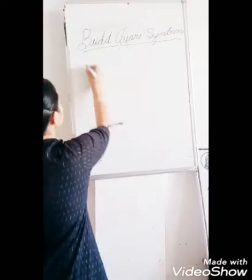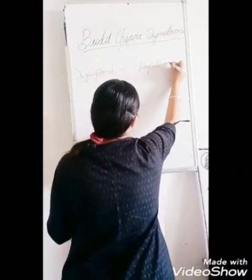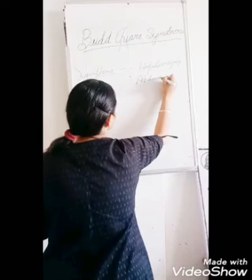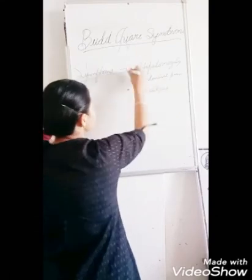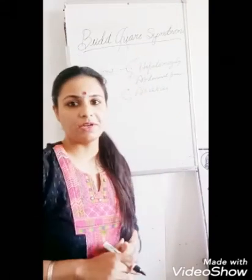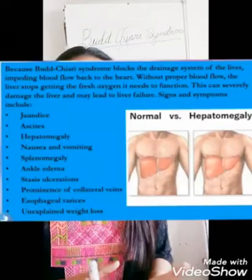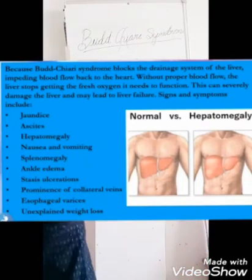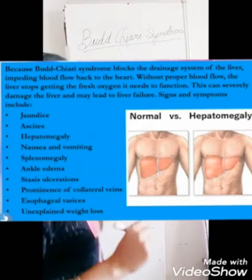In symptoms, there is hepatomegaly, then abdominal pain, and ascites — this is the triad present in Budd-Chiari Syndrome. Budd-Chiari Syndrome can be acute and chronic. In acute, there is hypertension, nausea, vomiting, distension of the abdomen, ascites, and hepatomegaly. In chronic, the features are similar to cirrhosis of the liver.